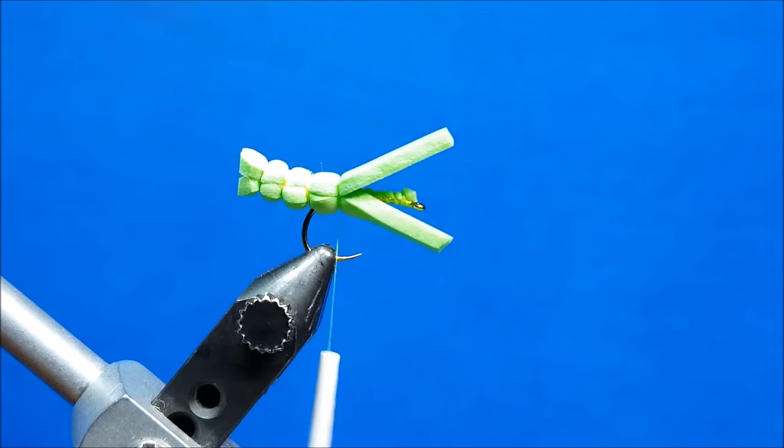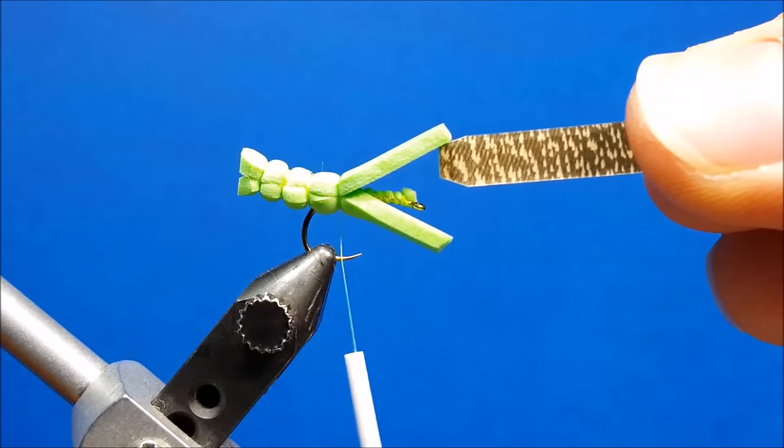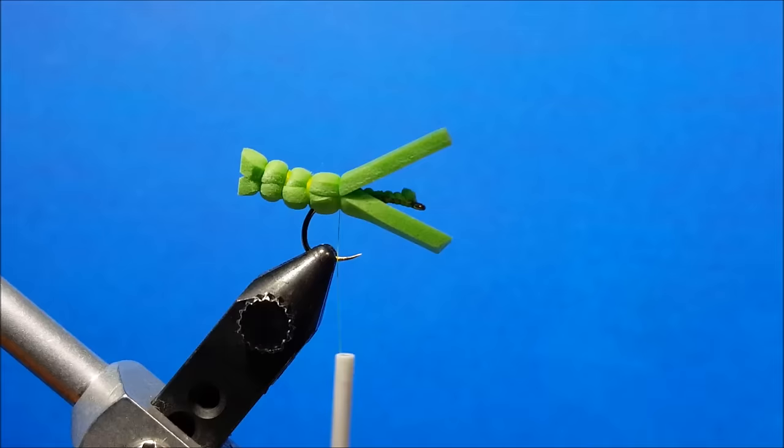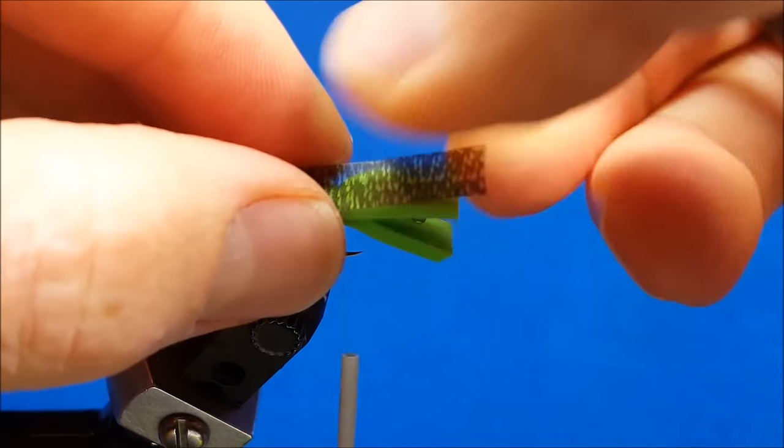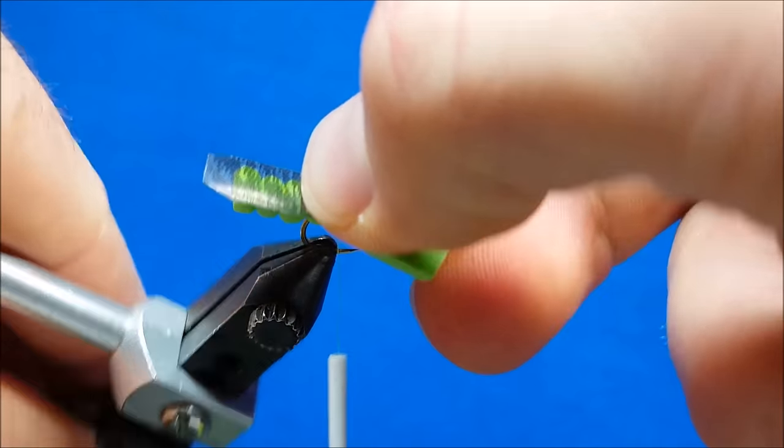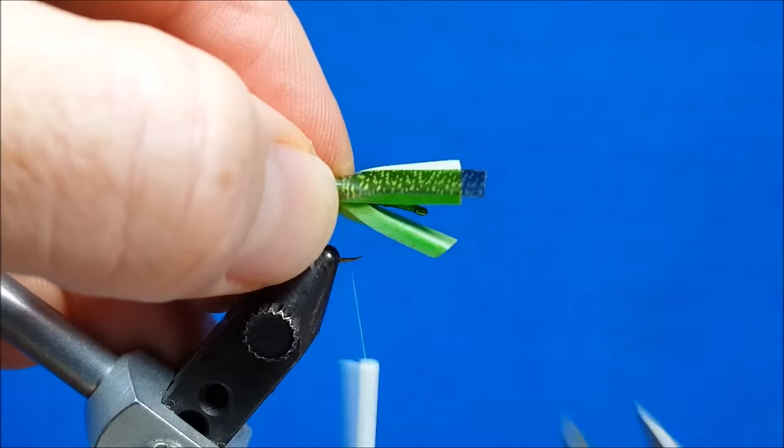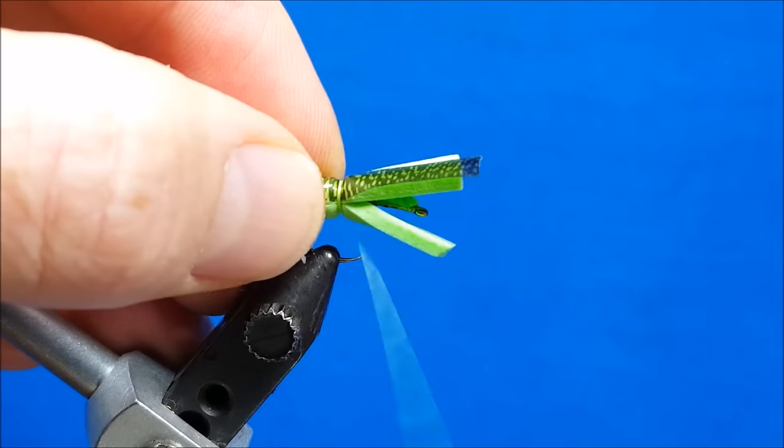On the top of this segment here, I'm going to tie in my wing material. What I've done is taken a strip of thin skin, about as wide as the hook gap, cut it to a little bit of a taper off the end. We want to make sure when we tie that in that it extends about maybe three sixteenths of an inch off the back of that fly. We'll take that, catch it with a couple wraps.